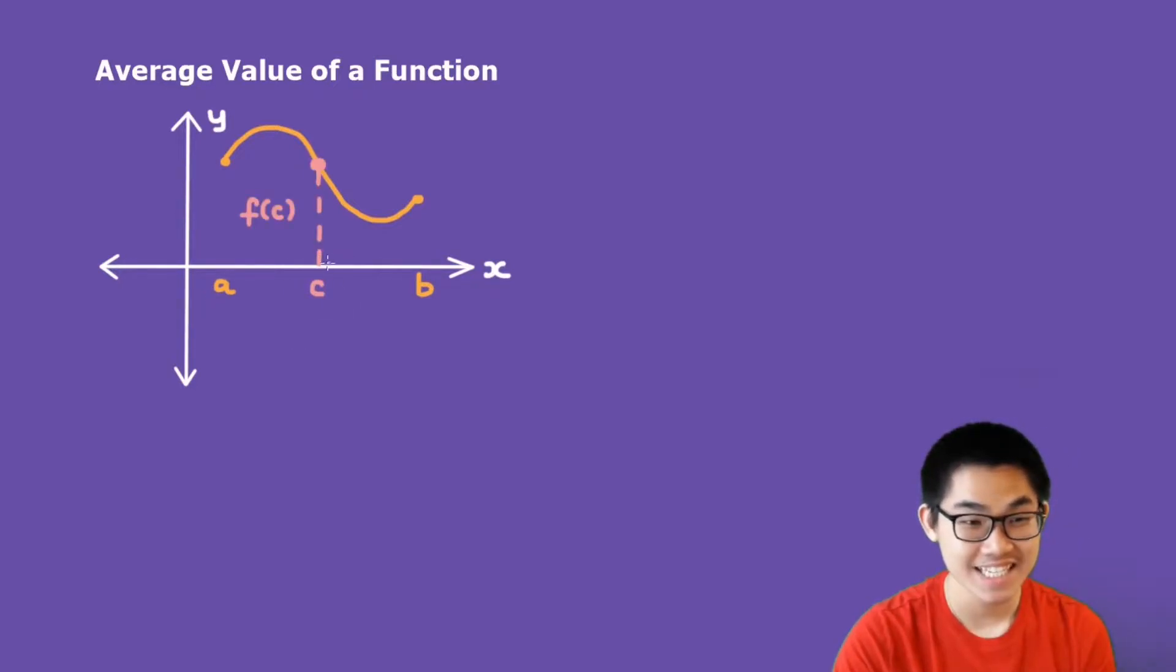This means that the distance from here to here is f of c. Now, instead of saying that this distance is f of c, I'm going to instead say that this distance is f of c. But as you can see, it's basically the same distance.